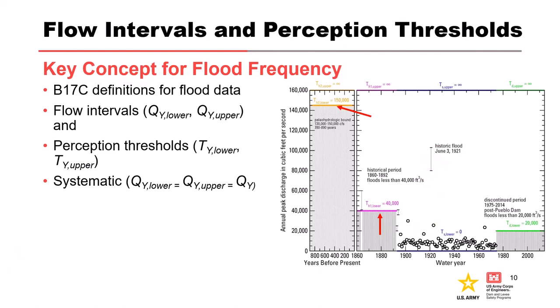Perception thresholds are a little trickier to understand. Bulletin 17C defines the lower bound as the smallest peak flow that would result in a recorded flow, and the upper bound as the largest peak flow that could be observed or recorded. The lower bound is the top of the gray area — meaning the lowest flow we would designate from a period of record. The upper bound isn't known, so it's designated as infinity. So the perception threshold is actually the area above the gray curve, defined from some flow value to infinity.